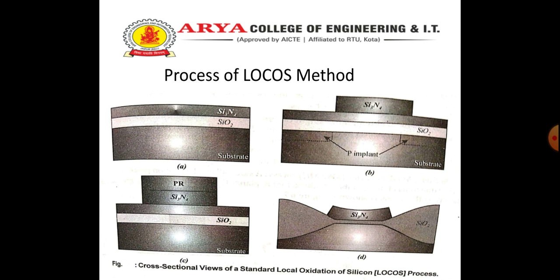In the LOCOS process, first a thin oxide and a layer of Si3N4 are deposited on the wafer, usually by LPCVD. After that, the nitride is patterned, the photoresist is stripped, and the wafer is oxidized. A thin oxide layer is grown on top of the nitride. Silicon oxidation consumes 44 percent as much silicon as it grows, and the resultant oxide is partially recessed. All this process can be seen by means of a figure.